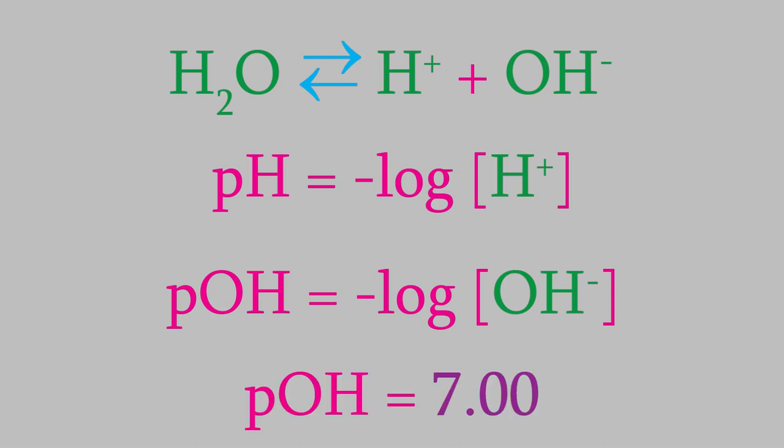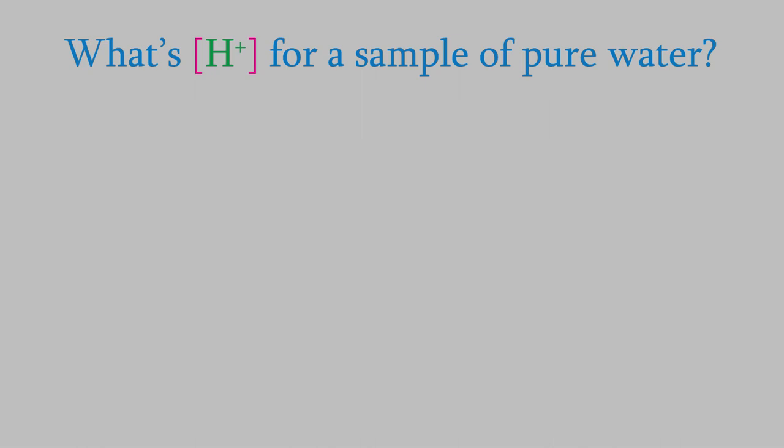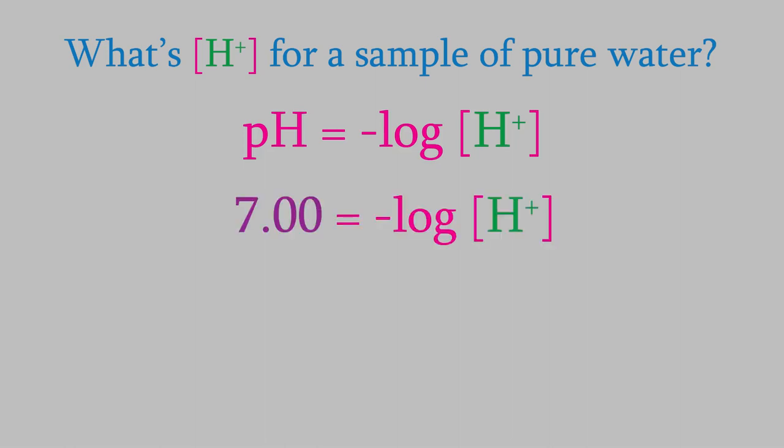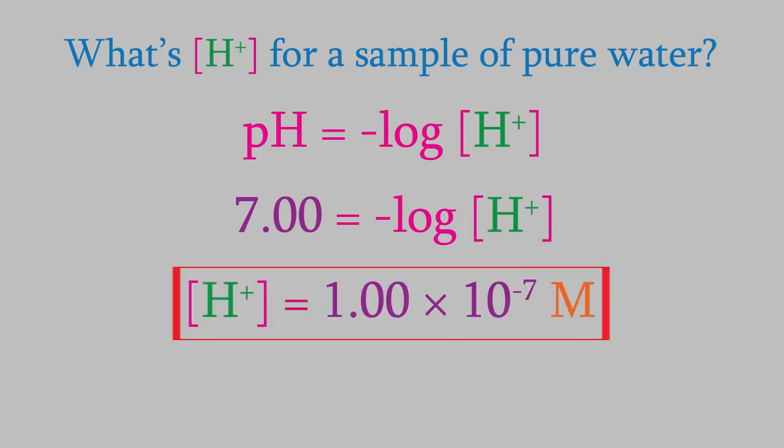We can figure out the concentrations of H-plus and OH-minus in water using the formulas we saw earlier. For example, let's find the concentration of H-plus ions in water. We'll use the formula for pH. We know that the pH is exactly 7, so we'll plug that in, and we can then solve for the concentration of hydrogen ions. We find that the result is 1.00 times 10 to the minus 7 molar. That's a really small concentration. And since water dissociates into equal numbers of hydrogen and hydroxide ions, this is also the concentration of hydroxide ions.